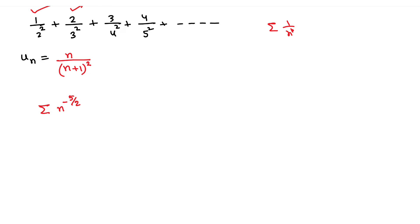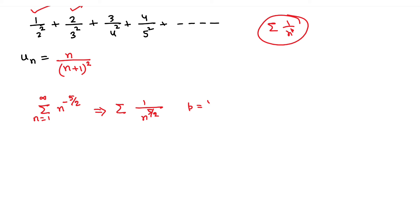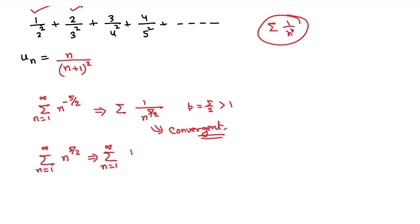Suppose I give you the series ∑(n^(−5/2)) for n=1 to infinity. We can write this as ∑(1/n^(5/2)), which is of the pattern ∑(1/n^p) with p = 5/2, and since 5/2 > 1, this series is convergent by p-test. Now suppose I write ∑(n^(5/2)) from n=1 to infinity. We can write this as ∑(1/n^(−5/2)) where p = −5/2, which is less than 1, so this series is divergent.